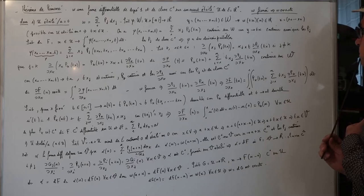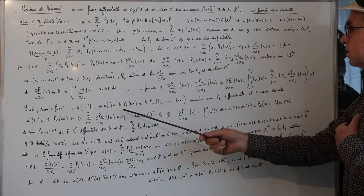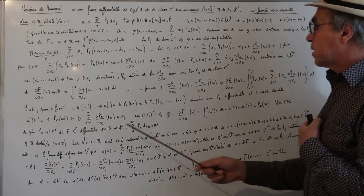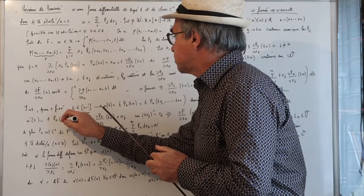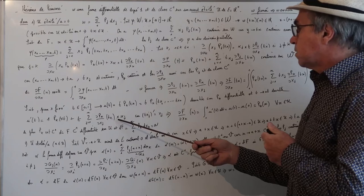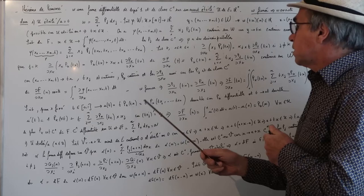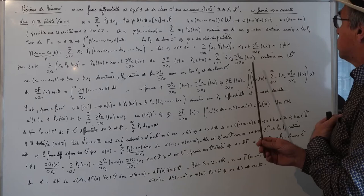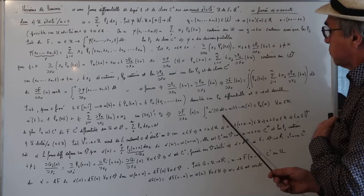Comme ω est fermée, ∂Pⱼ/∂xₖ(tx) = ∂Pₖ/∂xⱼ(tx). Pour x fixé, on considère la fonction u(t) = t·Pₖ(tx). Elle est dérivable car Pₖ est différentiable. On a u'(t) = Pₖ(tx) + t·Σⱼ (∂Pₖ/∂xⱼ)(tx)·xⱼ. Donc ∂f/∂xₖ(x) = ∫₀¹ u'(t) dt.